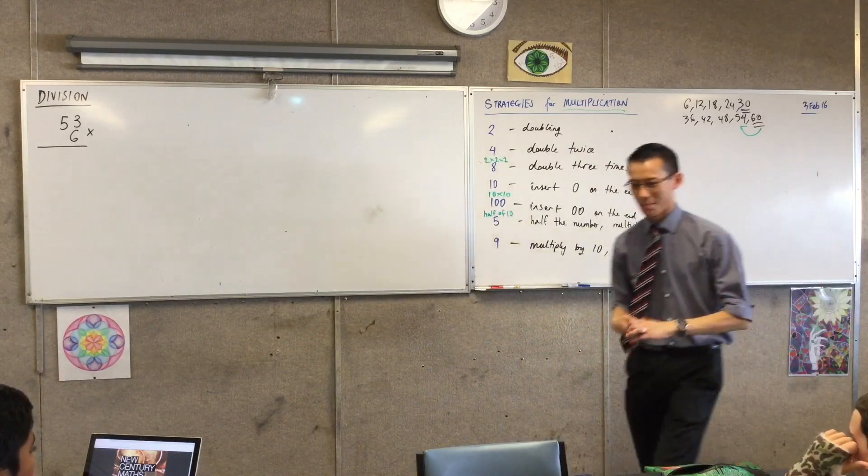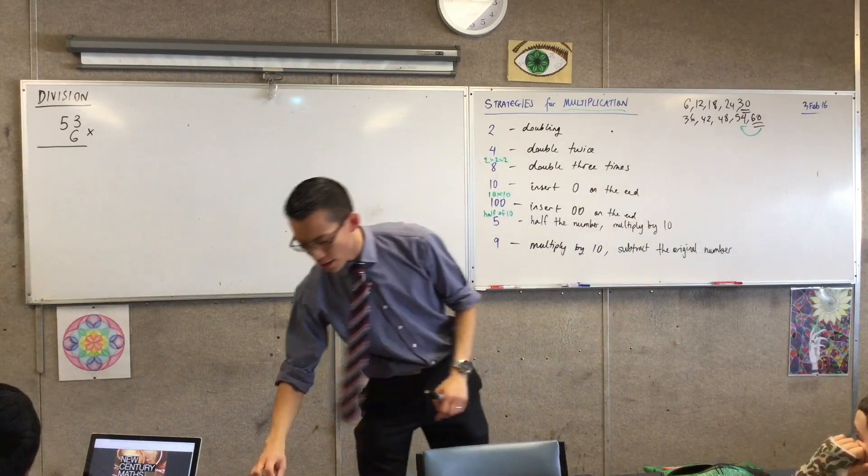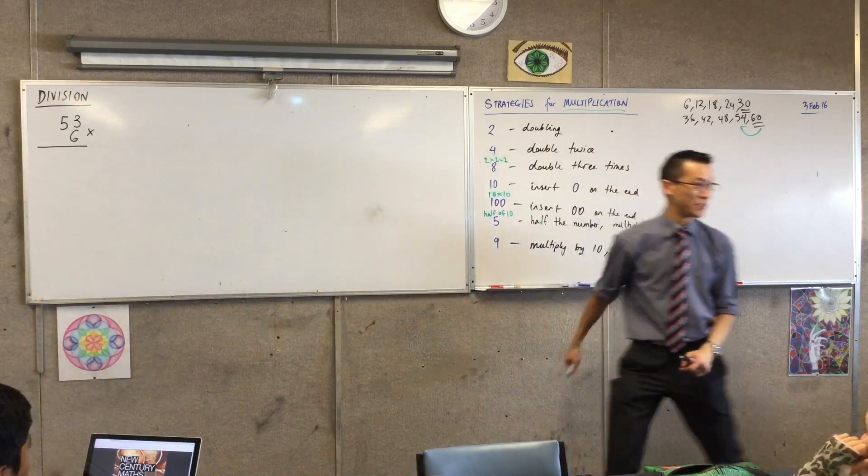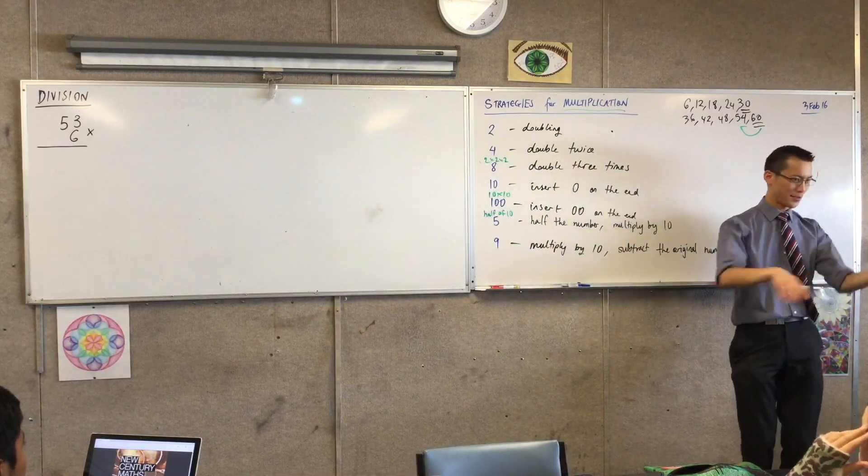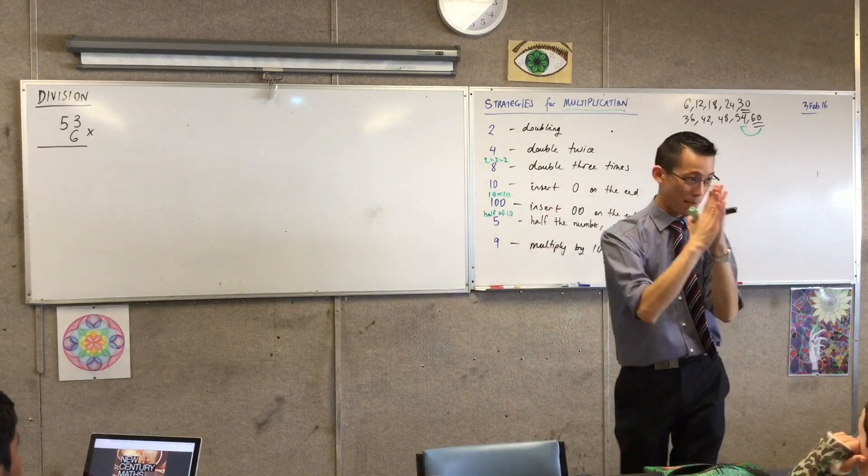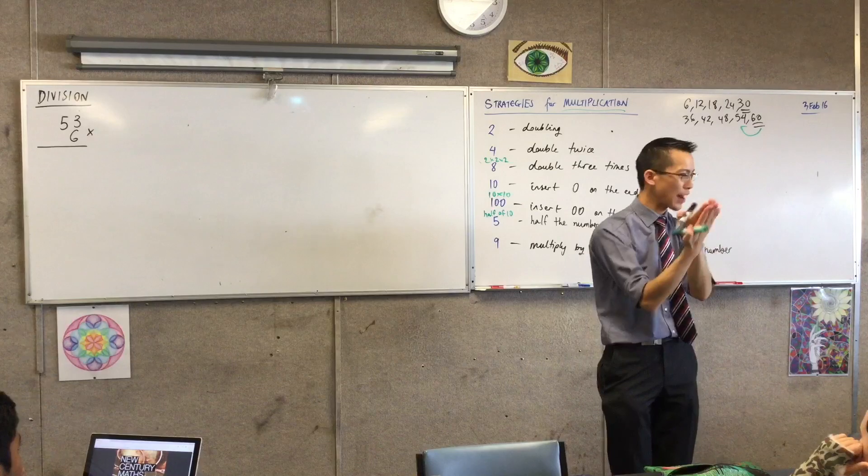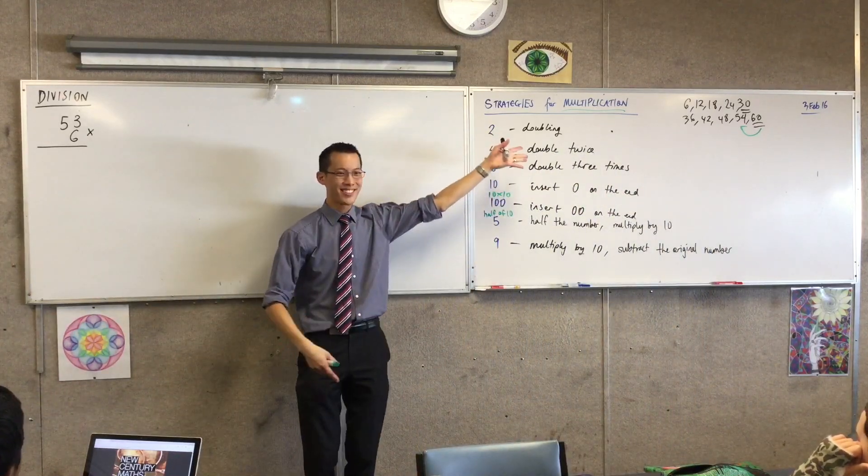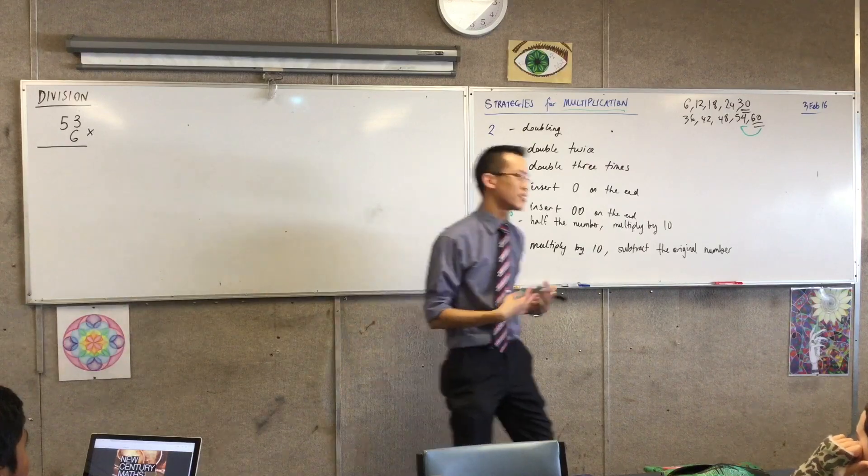I'm going to start off in a bit of a strange spot, which is that for thinking about division I want us to begin by thinking about multiplication. Now the reason why is because as I've said a couple times before, multiplication and division are two sides of the same coin, just looking at it from different angles. So if we know stuff about multiplication, which we do, we can use that to understand division.